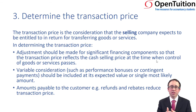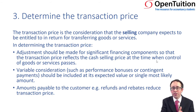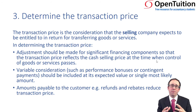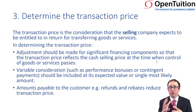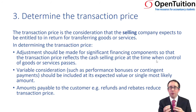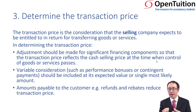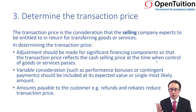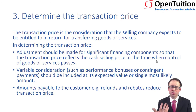There could be some variable consideration — you might receive more consideration in the future if you meet specific targets within the contract. That's usually the case if you're constructing an asset to sell to somebody else; there'll be performance-related bonuses, which you would recognize within the transaction price if you believe it's going to be probable. And if you pay back money to the customer — refunds, rebates — you just reduce the transaction price and therefore the amount of revenue that you recognize.